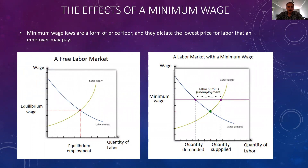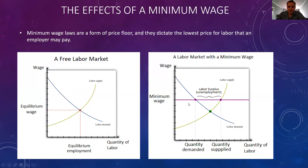To illustrate how this impacts the labor market, on the left panel I have a free labor market where the market is able to meet its equilibrium wage and equilibrium employment points, which is where the quantity of labor supplied equals the quantity of labor demanded. On the right side, we have a labor market that has been bound to a minimum wage, and at this point the market is not able to come to its equilibrium point, because the quantity demanded does not equal the quantity supplied, which leaves us with a labor surplus.